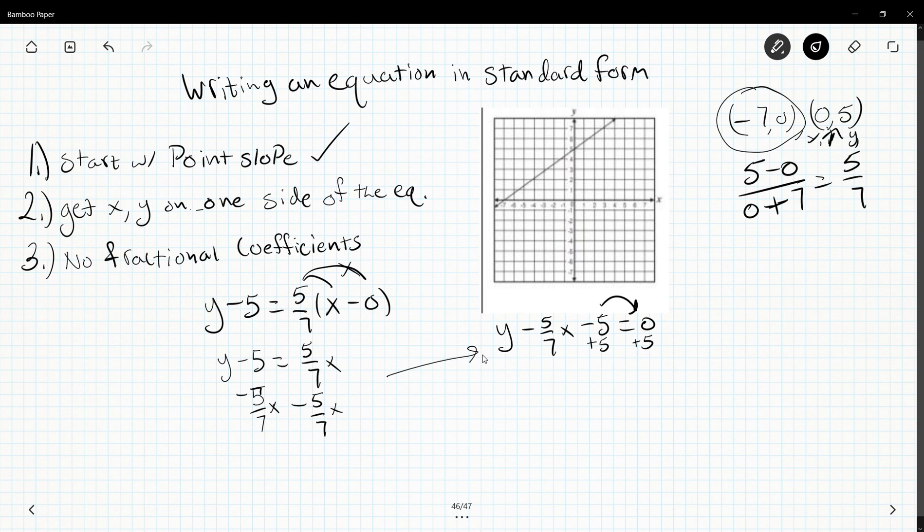If you like, you can do this at the same time as moving the x so we don't get all muddled together. I get y minus 5/7 x equals 5.